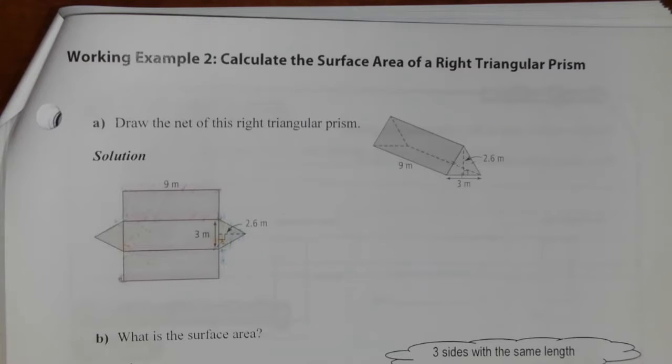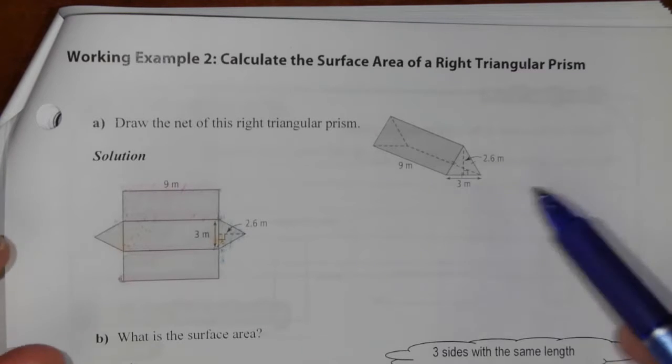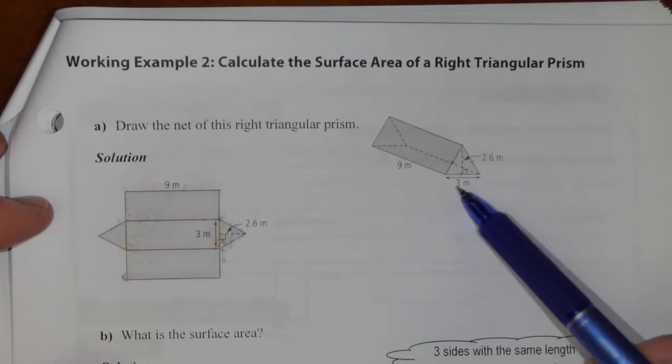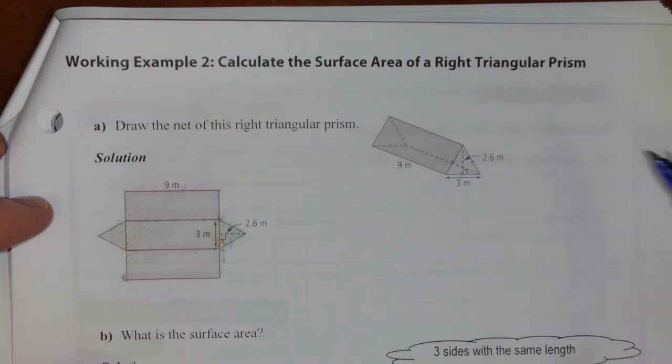Working example number two, calculate the surface area of a right triangular prism. So we've got a triangular prism here, 9 meter depth, 3 meter base, 2.6 meter height.